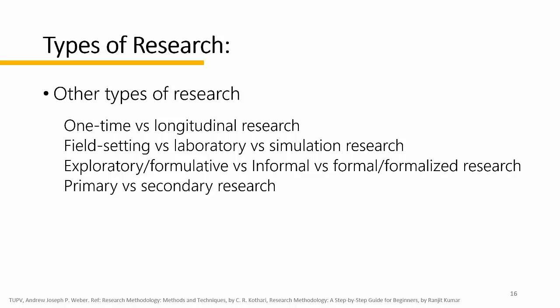Secondary research involves the summary, collation, and synthesis of existing research. It differs from primary research in that primary research involves the generation of data, whereas secondary research uses primary research sources as a source of data for analysis. For example, simply searching for a particular topic using a search engine like Google and making a summary of what you've found can be considered secondary research — it is basically educating yourself with information that other people have worked for. Common examples of secondary research include textbooks, encyclopedias, news articles, and review articles.